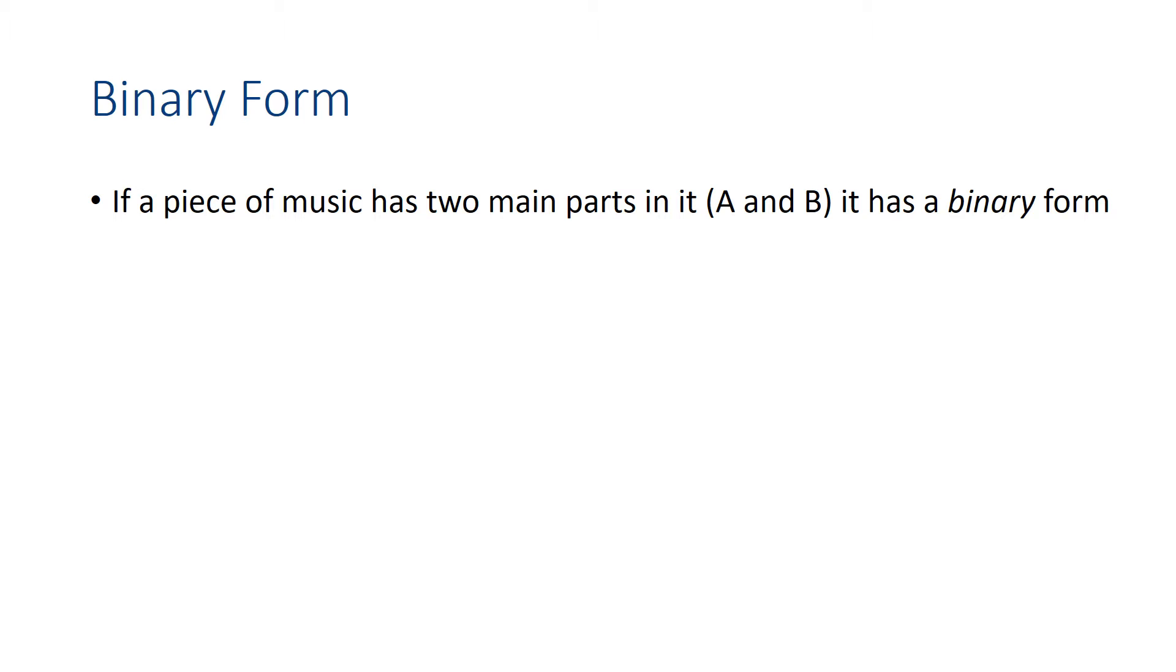So if a piece of music has two main parts, then we say it's in binary form. It has an A part and a B part. But if a piece of music has three main parts, A, B, A, we say it has ternary form.